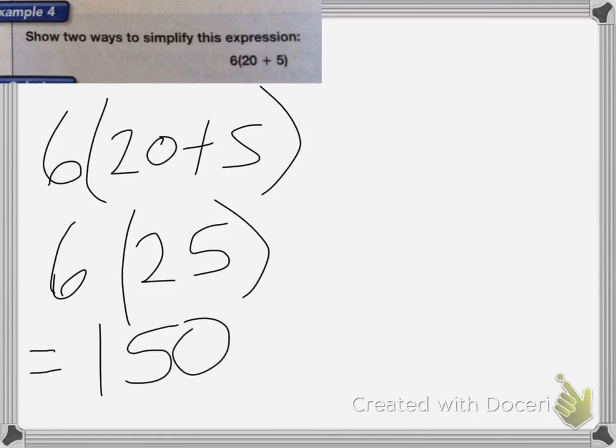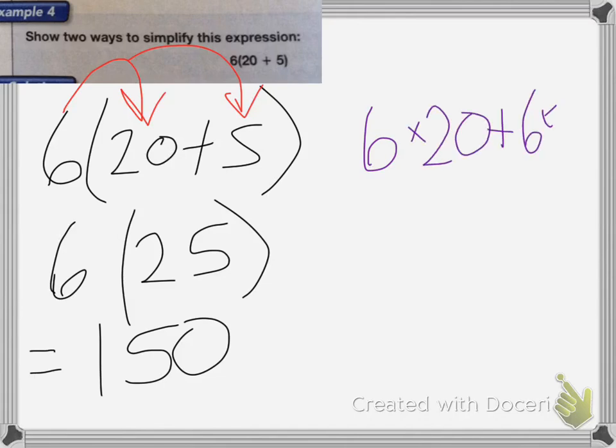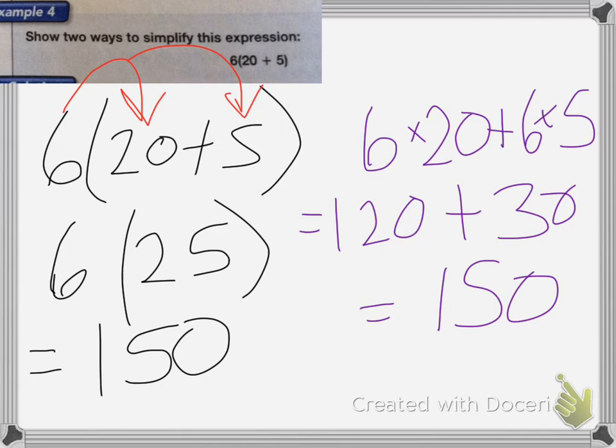The other way to do it is with the distributive property, and that's where I take the 6 and I multiply it to the 20 and to the 5 before I add it. So instead, I end up with 6 times 20 plus 6 times 5. That gives me 120 plus 30, which is equal to 150. No matter how I do it, I get the same answer when I do it correctly.